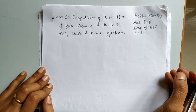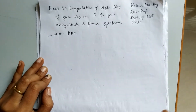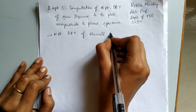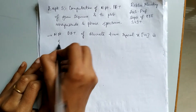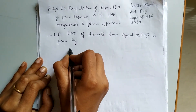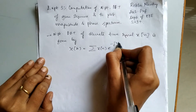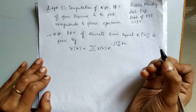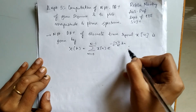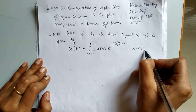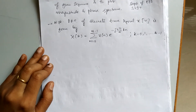The N-point DFT of a discrete time signal x(n) is given by the equation: X(k) = summation of x(n) into e to the power of minus j 2π/N into k into n, where n ranges from 0 to N−1. The variable k also starts from 0, 1, 2, and so on up to N−1. This is the DFT definition.